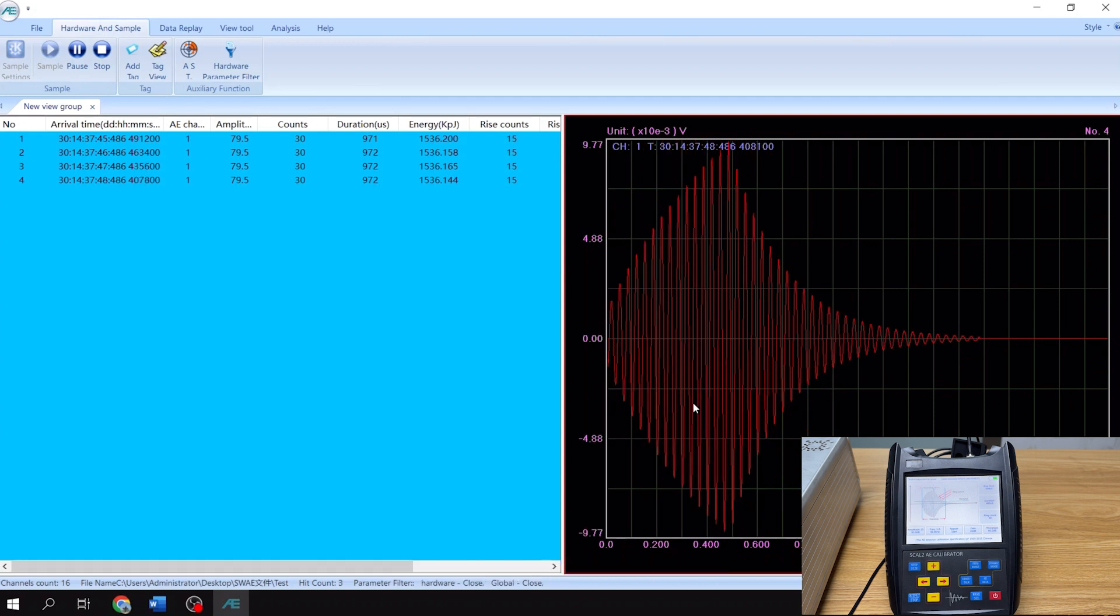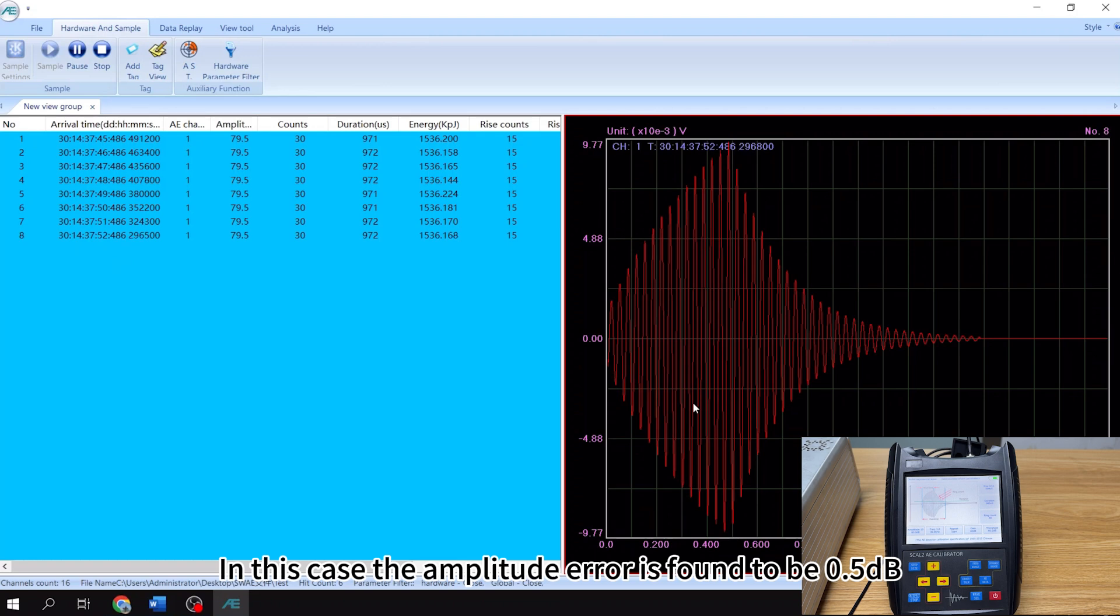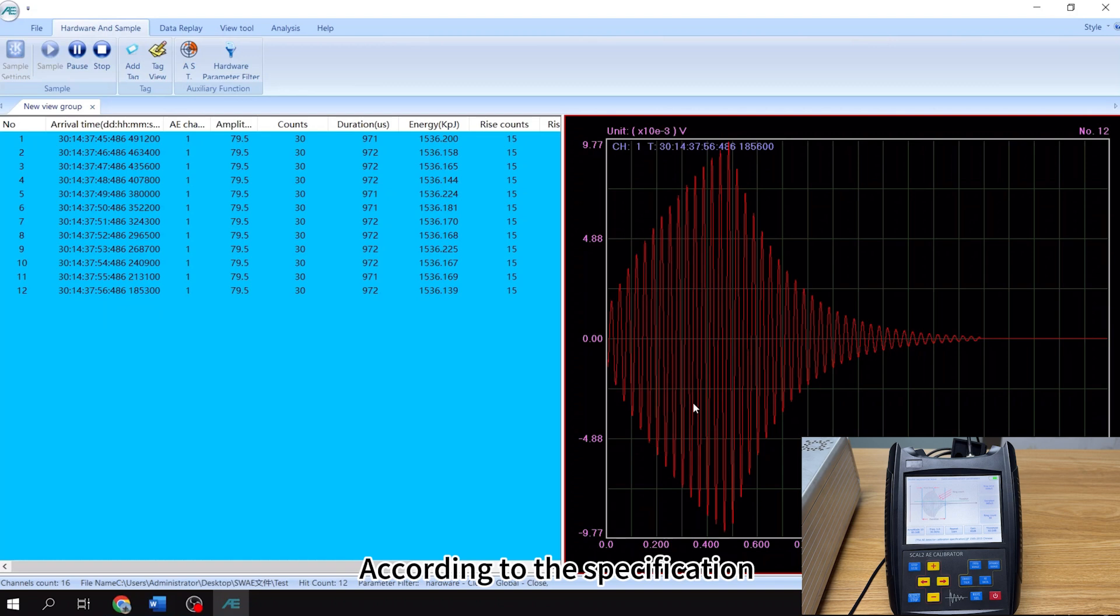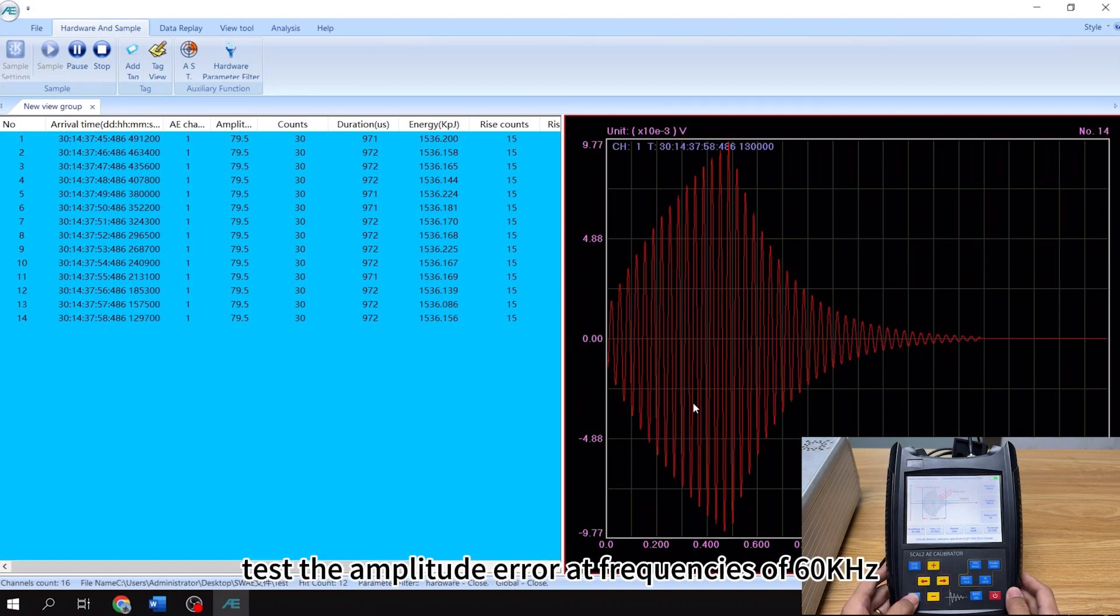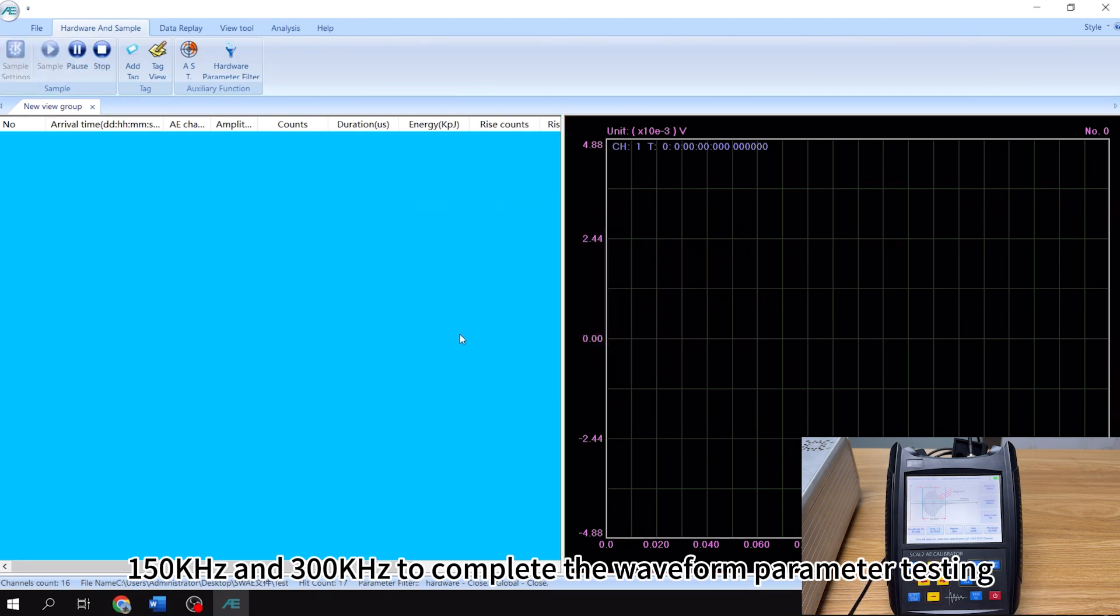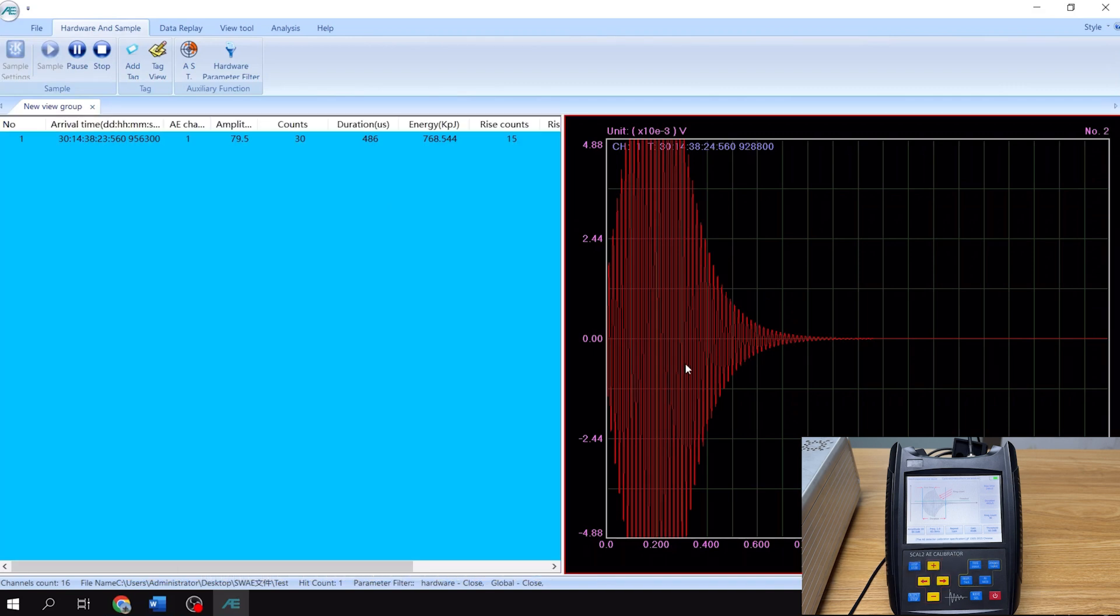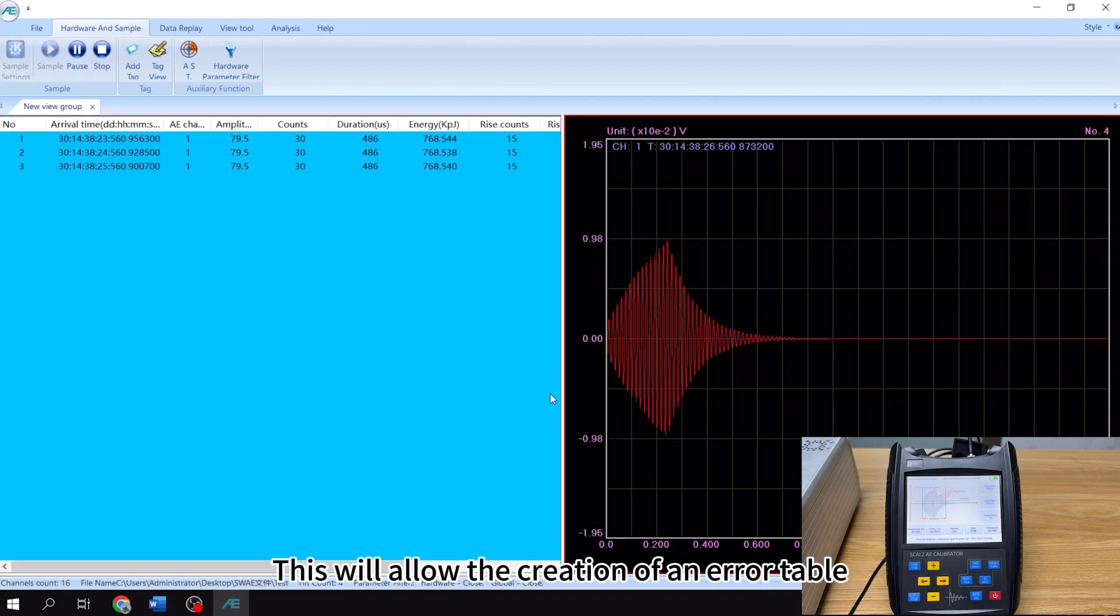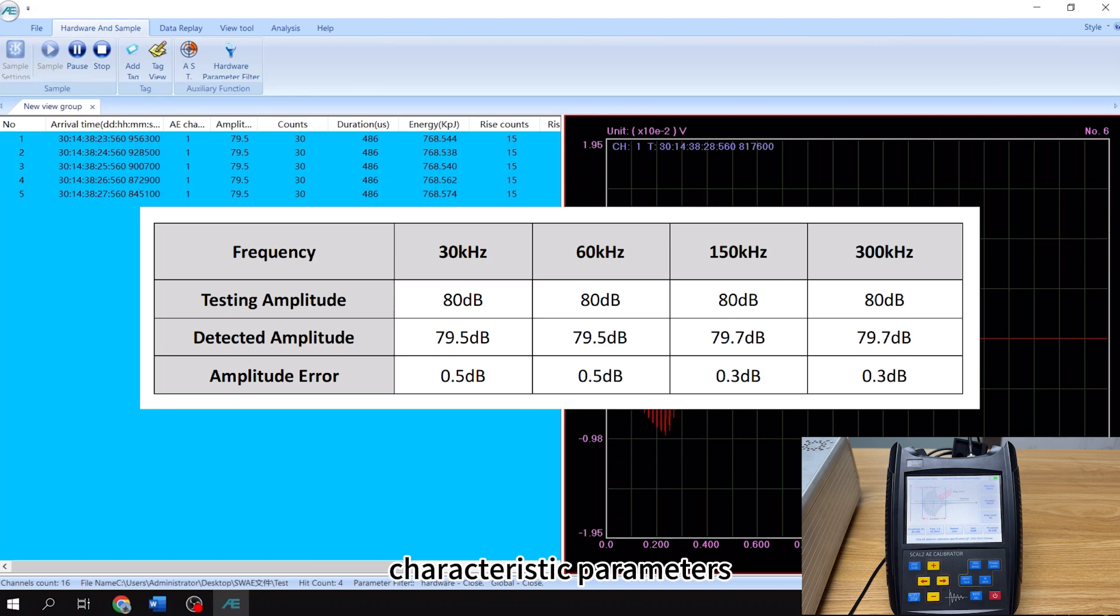Calculate the error value. In this case, the amplitude error is found to be 0.5 dB. According to the specification, test the amplitude error at frequencies of 60 kHz, 150 kHz, and 300 kHz to complete the waveform parameter testing. This will allow the creation of an error table for the Acoustic Emission characteristic parameters collected by the AE instrument.